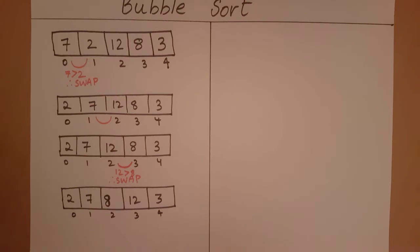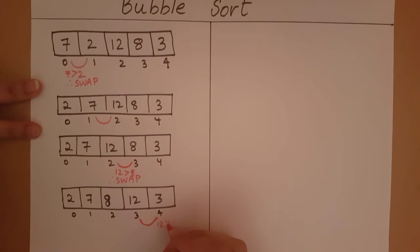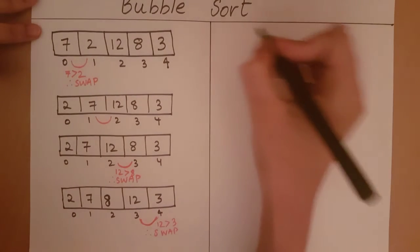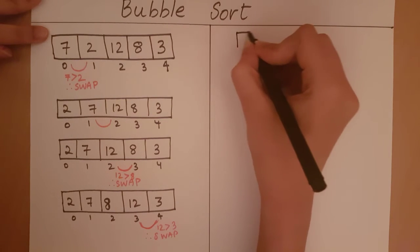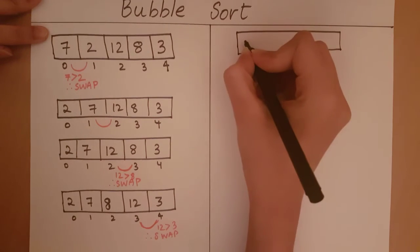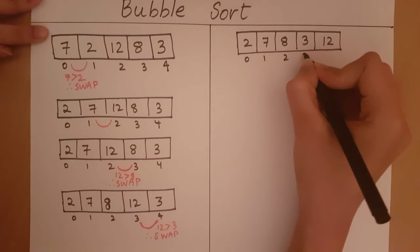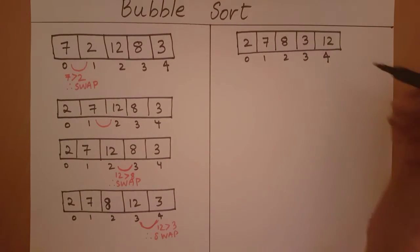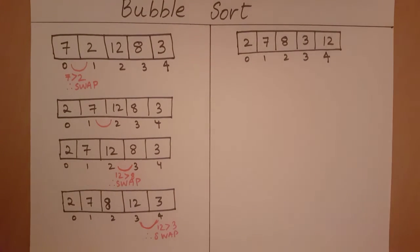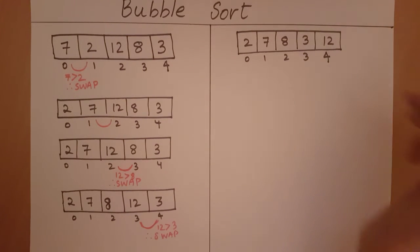Let's look at the next set of elements. We are going to compare the elements at index 3 and index 4. 12 is greater than 3, and so we want 12 to come after 3, so we are going to swap these two elements. Once we have reached the end of the array, the largest element is pushed to the last index. So now we have placed the correct element in the last position.